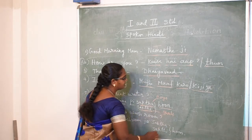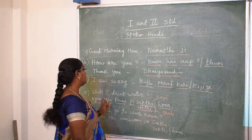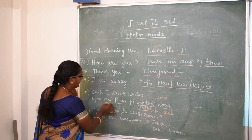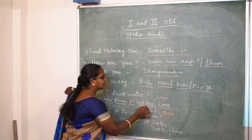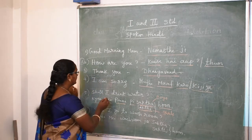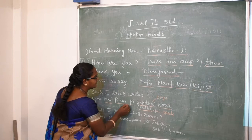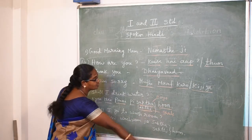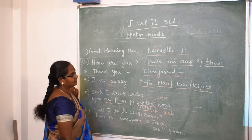Repeat: boys ask 'Kya main paani pii sakta hoon?' and girls ask 'Kya main paani pii sakti hoon?' So the 'A' sound is for boys and the 'E' sound is for girls.